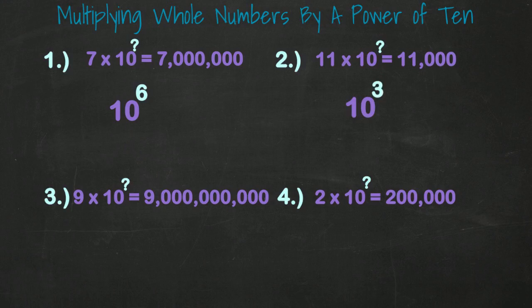9 times 10 to what power equals 9 billion? Here you'll see 9 zeros following the original 9, so the answer is 10 to the 9th power.